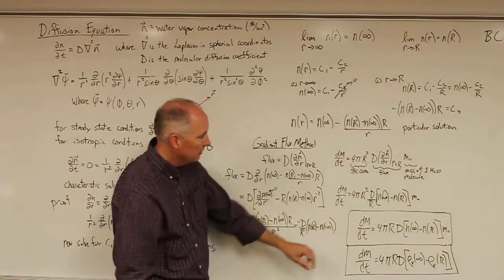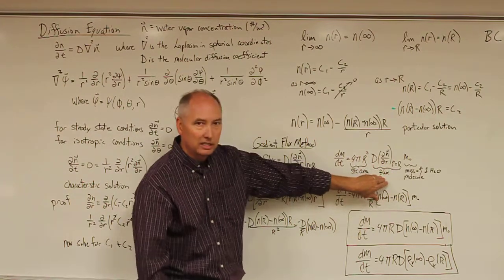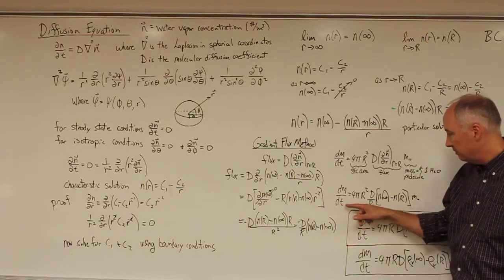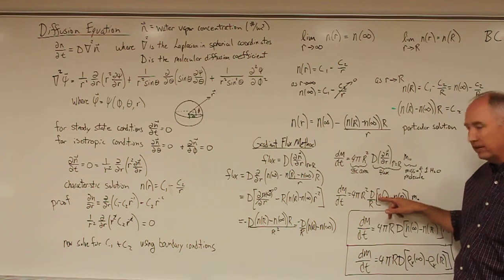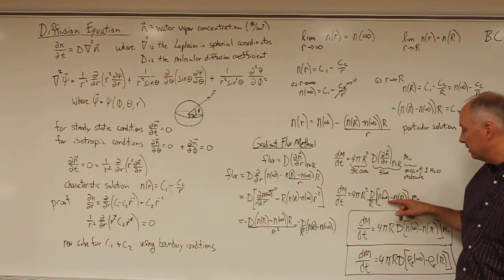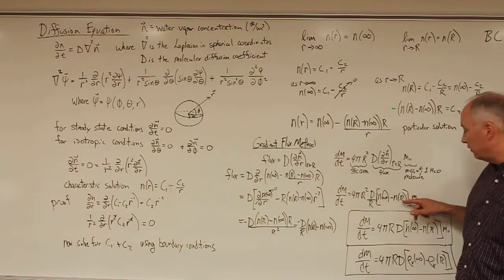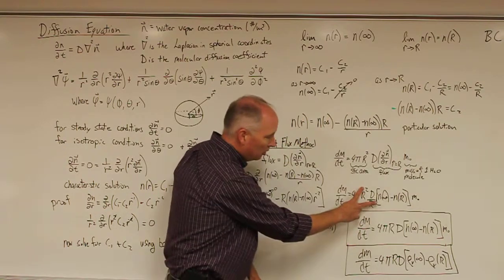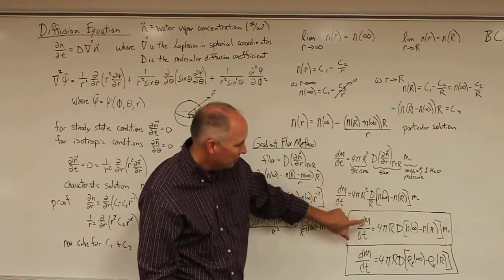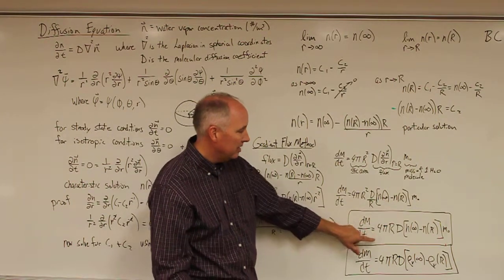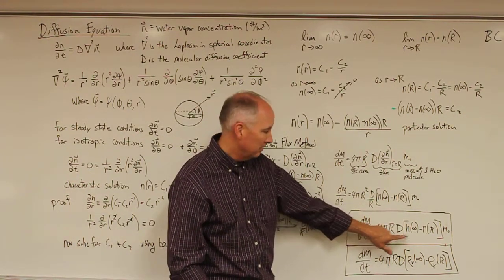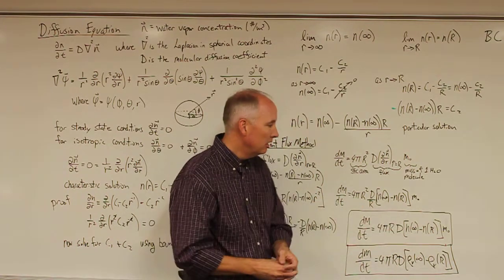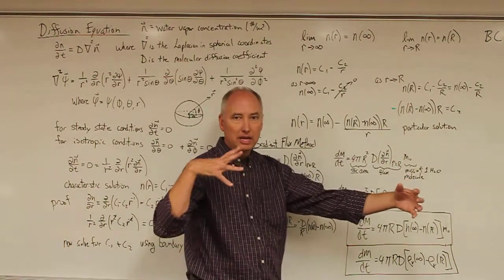Inserting that gradient into the flux and then into dm/dt, we get: dm/dt equals 4πr² times D over R times (n(infinity) minus n(R)) times the mass of an individual water molecule. The r squared and one R cancel, leaving the mass growth equation: dm/dt equals 4πR times the diffusivity times the difference in water vapor concentration infinitely far from the droplet and at the droplet surface.